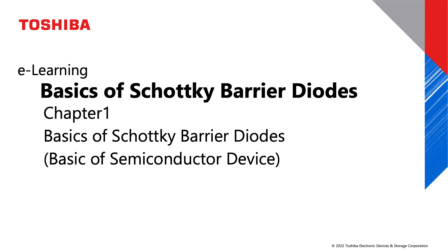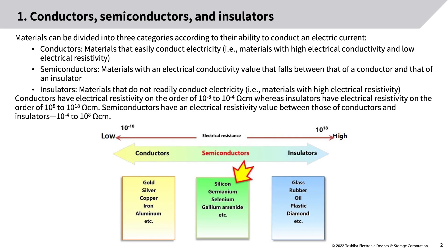Basics of semiconductor devices: conductors, semiconductors, and insulators. Materials can be divided into three categories according to their ability to conduct an electric current. Conductors are materials that easily conduct electricity, with high electrical conductivity and low electrical resistivity. Semiconductors have an electrical conductivity value that falls between that of a conductor and that of an insulator.